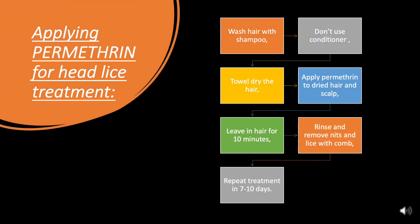Applying permethrin for head lice treatment: Step 1 — wash hair with shampoo. Step 2 — do not use conditioner. Step 3 — towel dry the hair. Step 4 — apply permethrin to dried hair and scalp. Step 5 — leave in hair for 10 minutes. Step 6 — rinse and remove nits and lice with a comb. Step 7 — repeat treatment in 7 to 10 days.